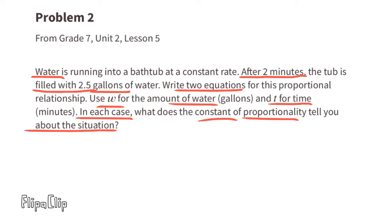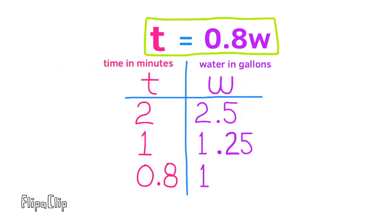Water is running into a bathtub at a constant rate. After two minutes the tub is filled with 2.5 gallons of water. Write two equations for this proportional relationship. Use w for the amount of water in gallons and t for time in minutes. In each case, what does the constant of proportionality tell you about the situation?